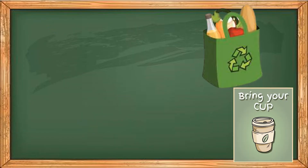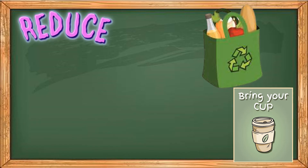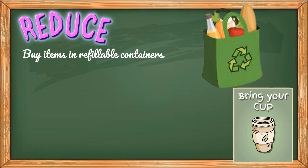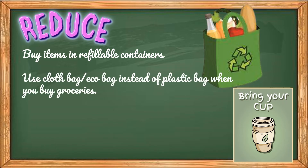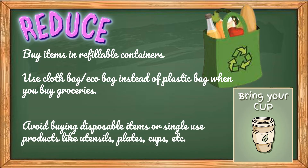Here are some ways to help preserve one's environment through the 5 Rs of responsible waste management. First, reduce. Buy items in refillable containers. Use a cloth bag or eco bag instead of a plastic bag when you buy groceries. Avoid buying disposable items or single-use products like utensils, plates, cups, etc.